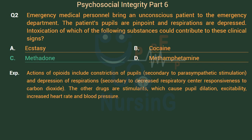Actions of opioids include constriction of pupils secondary to parasympathetic stimulation, and depression of respirations secondary to decreased respiratory center responsiveness to carbon dioxide. The other drugs are stimulants, which cause pupil dilation, excitability, increased heart rate, and blood pressure.